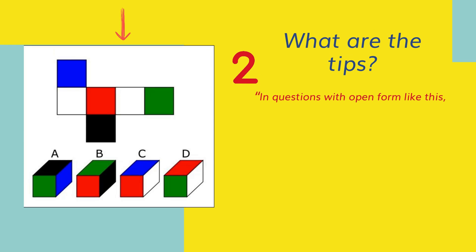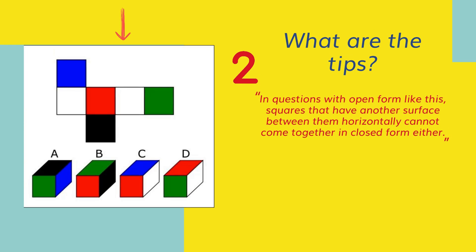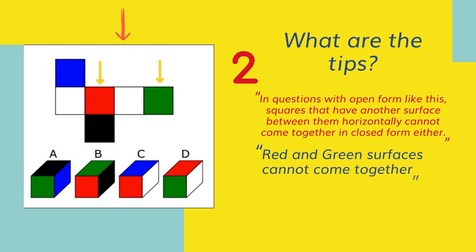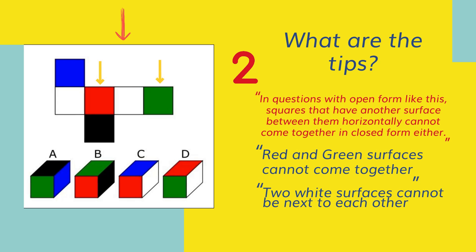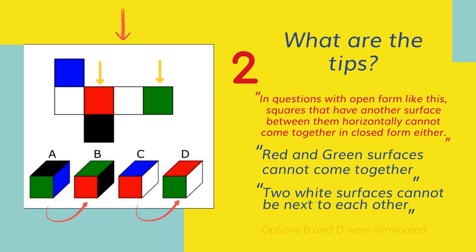In questions with an open form like this, squares that have another surface between them horizontally cannot come together in closed form. Red and green surfaces cannot come together, and two white surfaces cannot be next to each other.